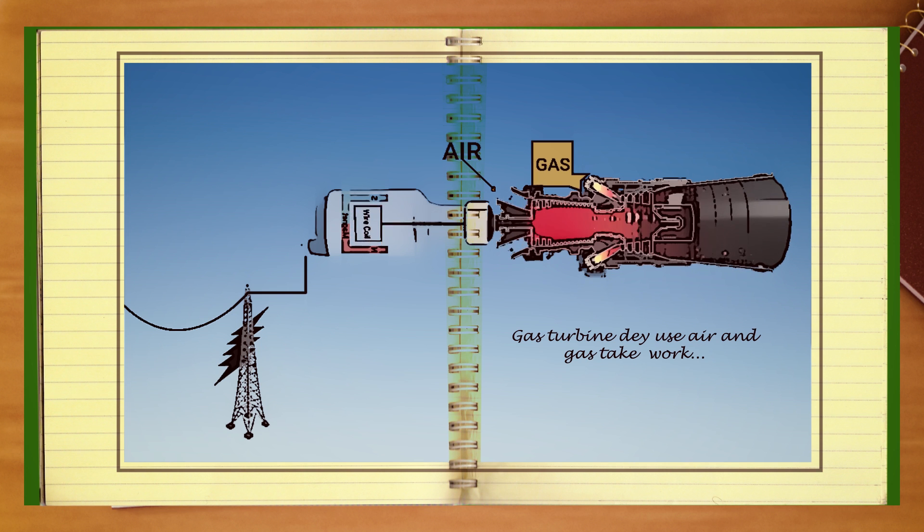The way the gas turbines work in Nigeria, they burn fuel which causes small explosions. The power from the explosion turns the metal plates in the magnets and forms electricity.